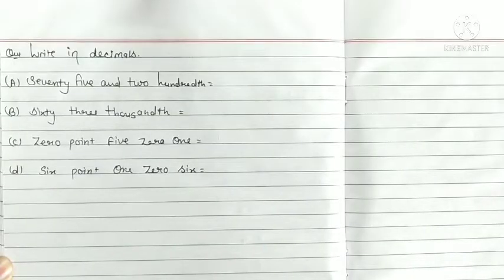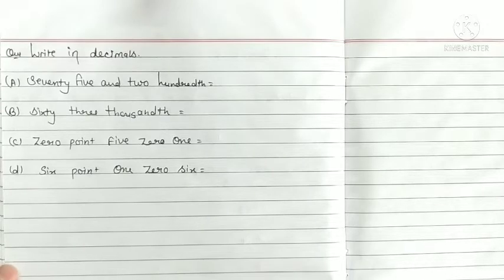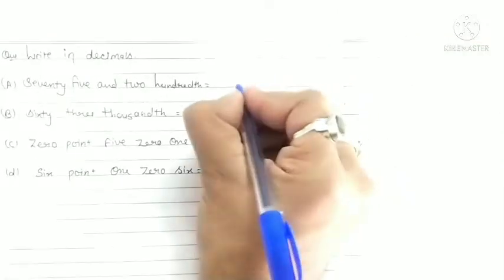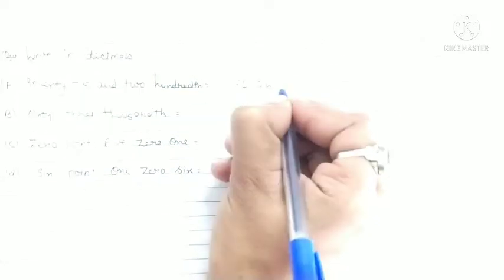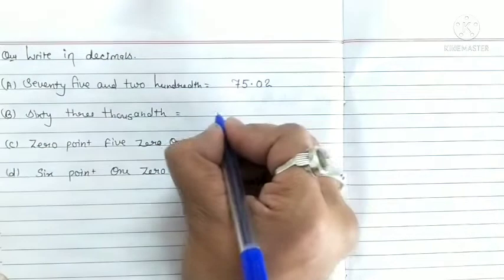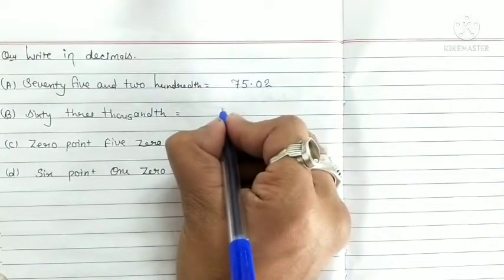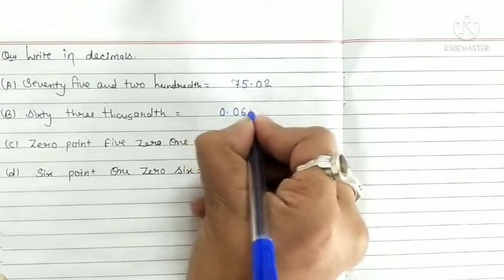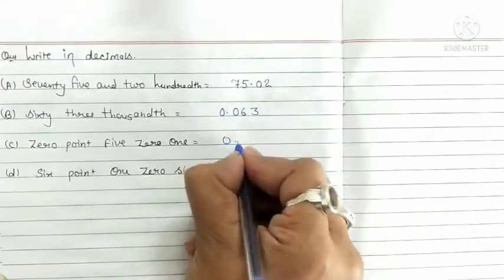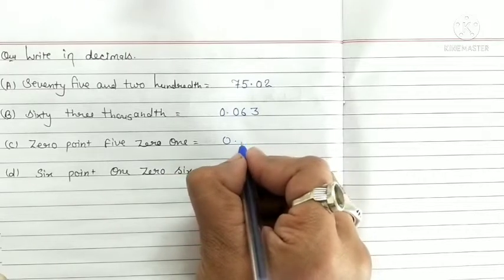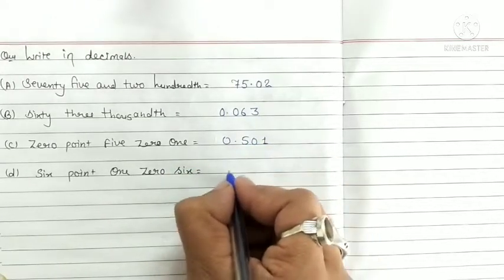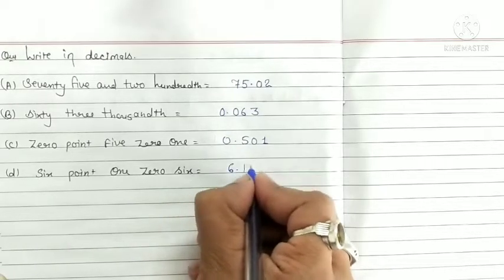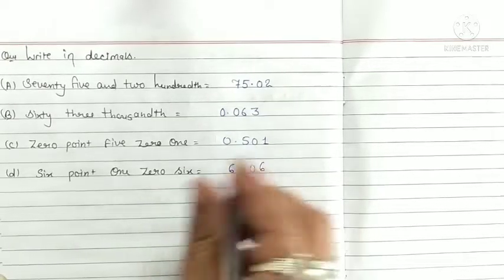Now next, write in decimals. First is seventy five and two hundred, 75.263. Sixty three thousandth, so 0.063. 0.5, 0.015, and 6.106.